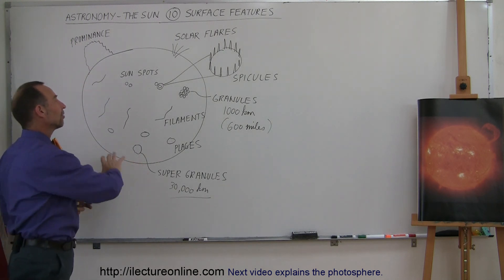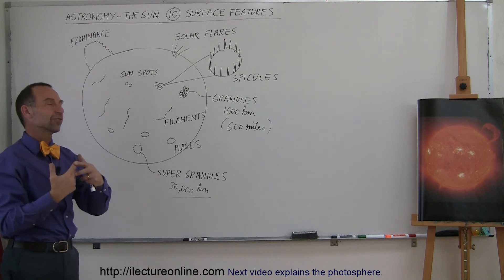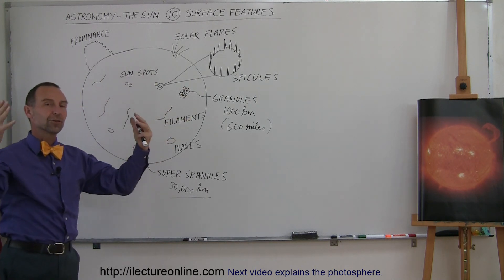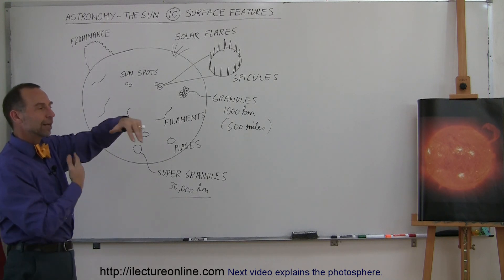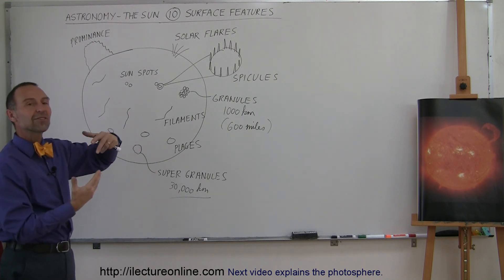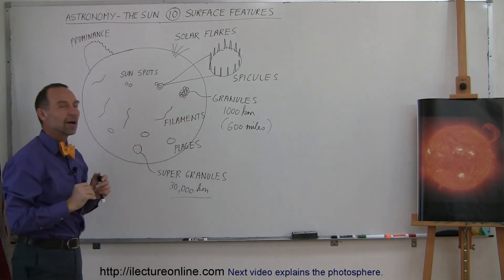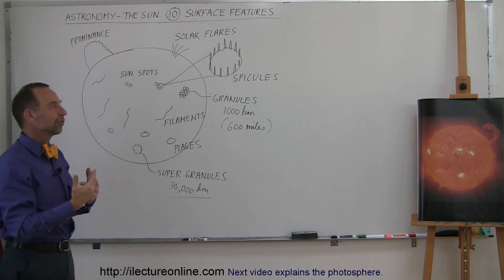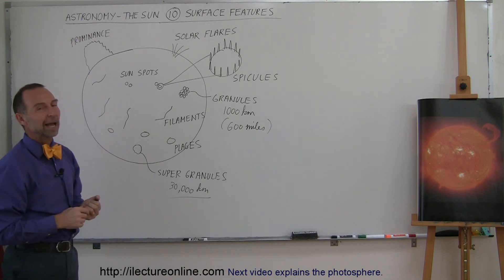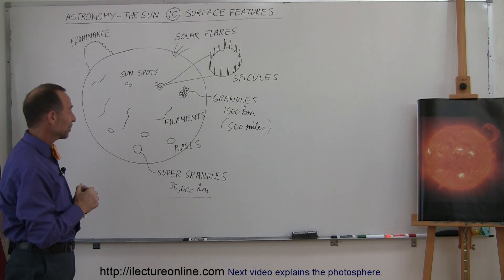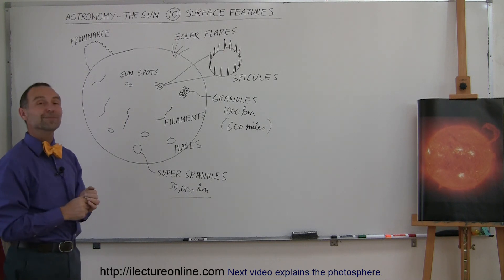So you can see that once the magnetic fields begin all, get all twisted up, all these surface features begin to appear until the solar cycle is over, the whole magnetic field system resets itself, the magnetic field lines are now nice and smooth and the whole surface of the Sun calms down until the cycle starts again and all these surface features start coming back. That's the Sun and what it looks like when the magnetic field lines go crazy. Thank you.